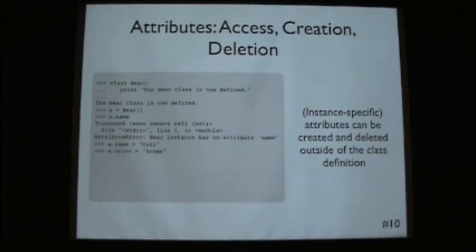We can create the name just by defining it as Oski. We can give our bear a color, brown. And we can, just as before, we can delete any of these attributes. So I can trace back again when I do a.name because I deleted that.